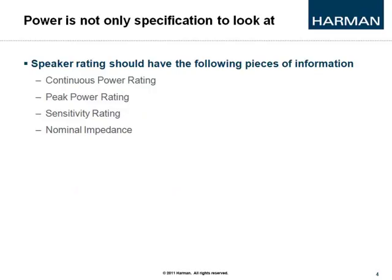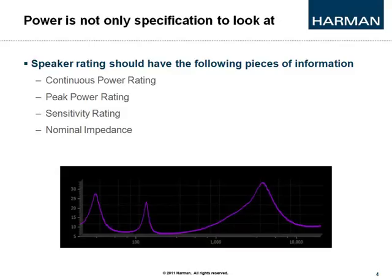Power is not the only specification to look at. Speakers will also have a sensitivity rating — how well the speaker plays when you apply one watt of power at one meter away — which is a way of comparing speakers using a common standard. There's also nominal impedance, which can simply be described as frequency-specific resistance. The resistance presented to the amplifier varies at different frequencies, as shown in the graph. Nominal impedance is often taken as 1.2 times the lowest point, so you can't just use a standard multimeter to measure it.